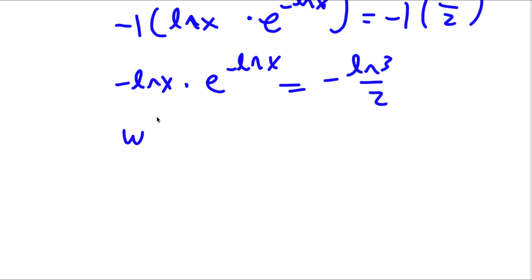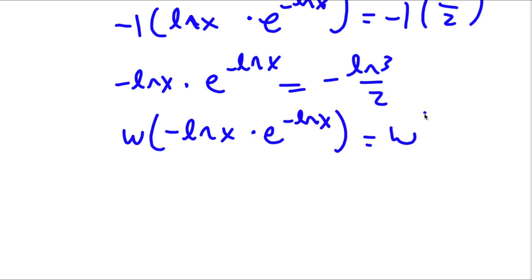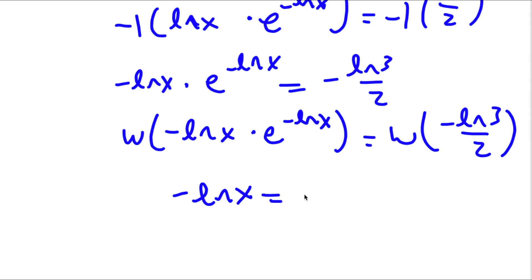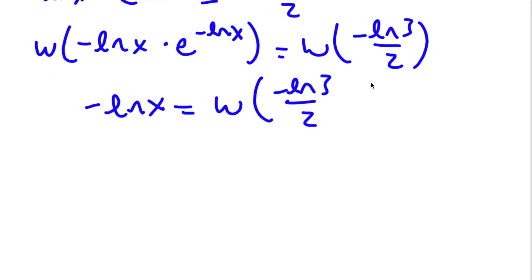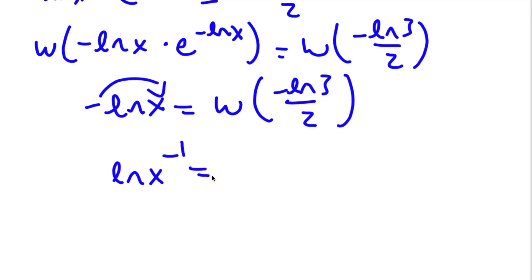Now I can take the Lambert W function on both sides. So I have W of negative ln x times e to the power of negative ln x is equal to W of negative ln 3 over 2. This simplifies so that negative ln x is equal to W of negative ln 3 over 2. Moving the negative 1 gives ln x to the power of negative 1 is equal to W of negative ln 3 over 2.